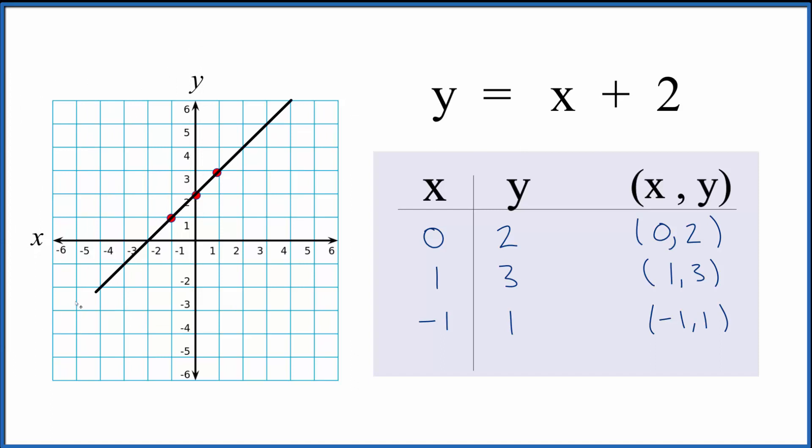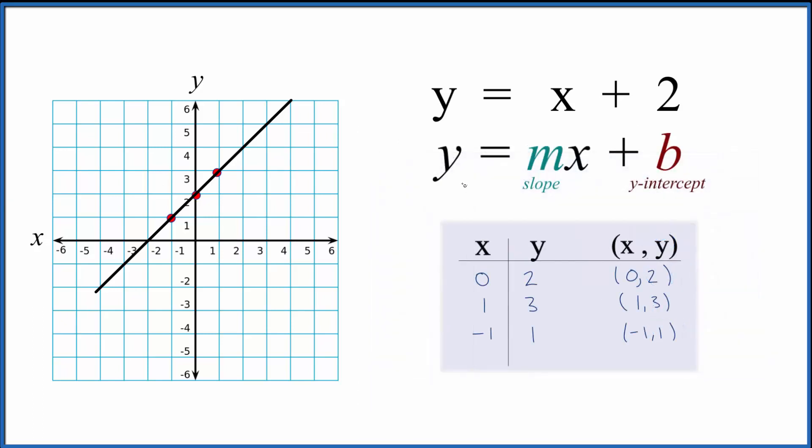The other way we can do this is use the slope-intercept formula. So the slope-intercept formula y equals mx plus b. b, that's the y-intercept. So here the y-intercept is 2.